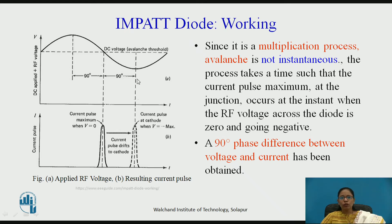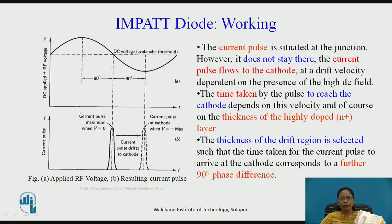Another 90-degree phase shift — needed to make the IMPATT diode work in the negative resistance region — can be obtained by using the drift space and adjusting its dimensions. The current pulse situated at the junction will not stay there; it will move towards the cathode. The drift velocity depends on the presence of the high DC field, and the time taken by the current pulse to reach the cathode depends on the velocity and the thickness of the highly doped N+ layer. The thickness of the drift region is selected such that the transit time provides another 90-degree phase shift. In total, we get 180-degree phase shift between voltage and current — voltage is at negative maximum when current is at positive maximum.